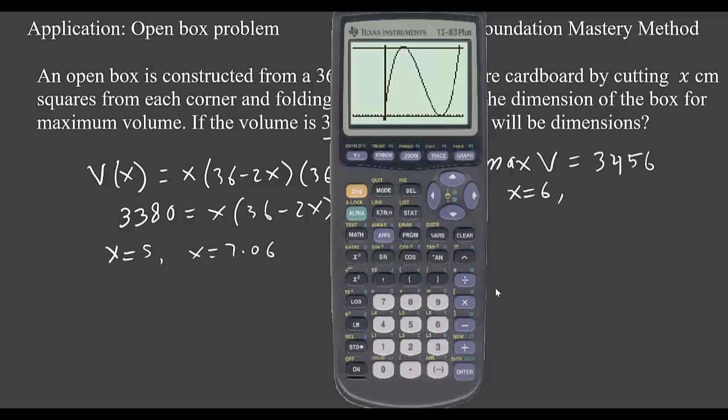So we see that we can have 3380 cubic centimeter volume if x is 5 centimeters or 7.06 centimeters. But the other one, if you see here, it will go outside the domain. Just have a look.